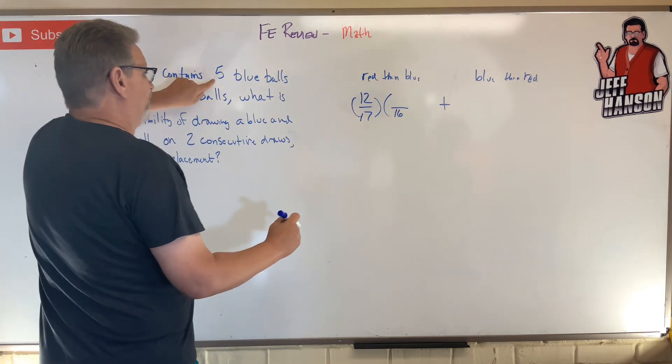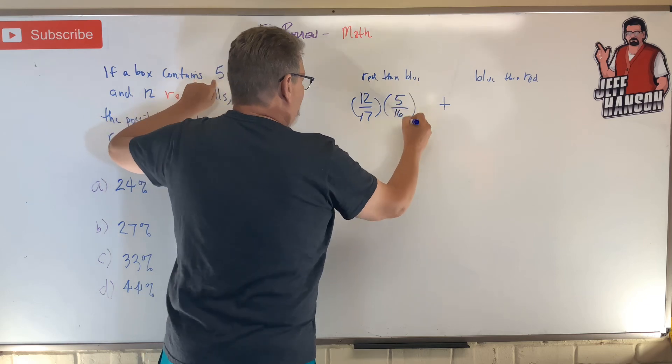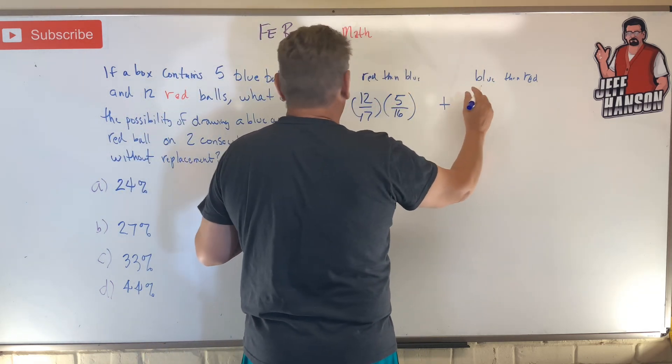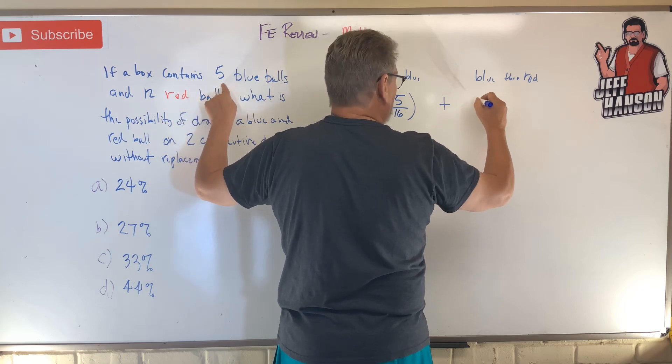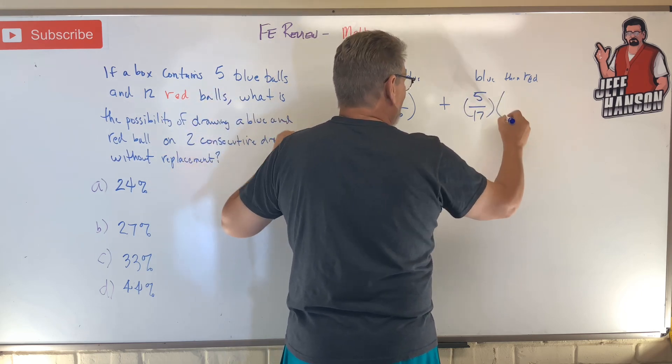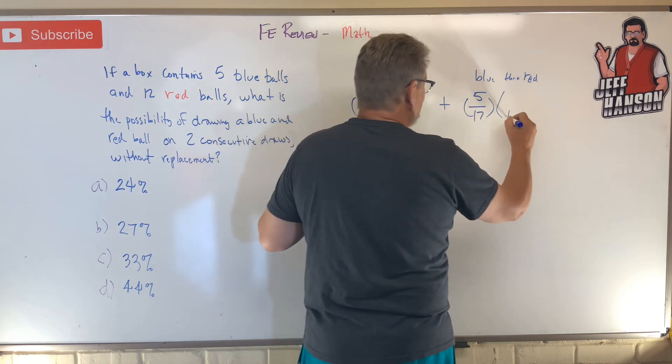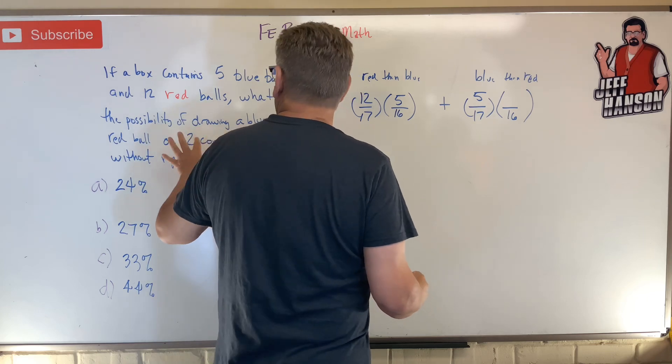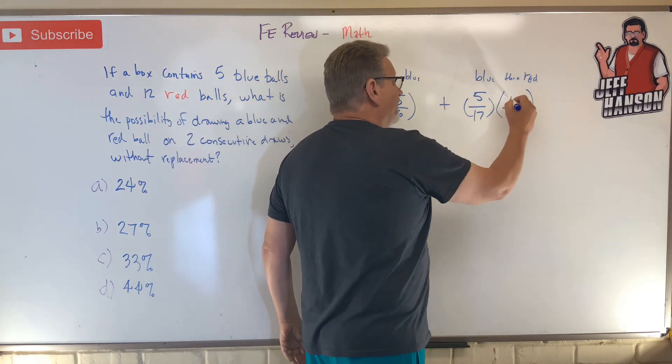How many blue ones do we have? Five. And then over here, blue then red. If you want a blue one first, there were only five of those, so you got a five out of 17 chance of getting that. And then in the end you got 16 left, and what's the chances of drawing now a red ball? Well, there's 12 of them in there, so you got a 12 out of 16 chance.